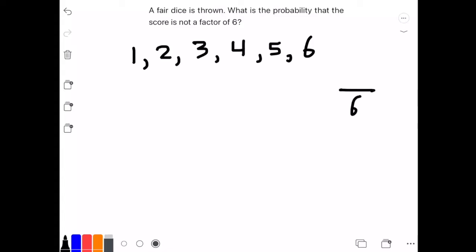Next we're going to find the numbers that are not factors of 6 that are between 1 and 6. So I'm going to list the numbers, and 4 and 5 are not going to be factors of 6.